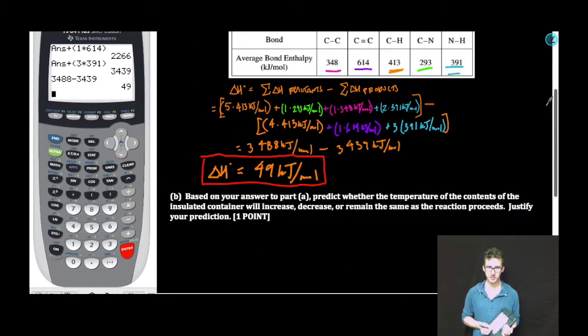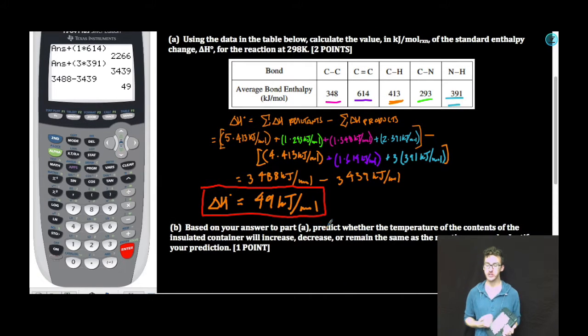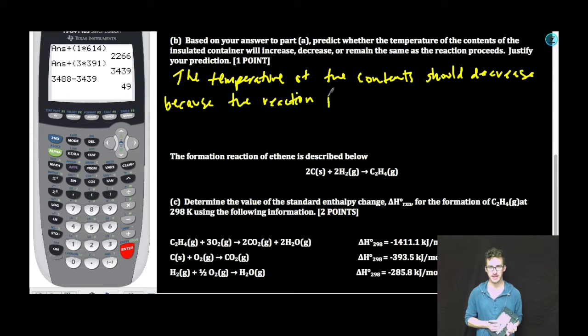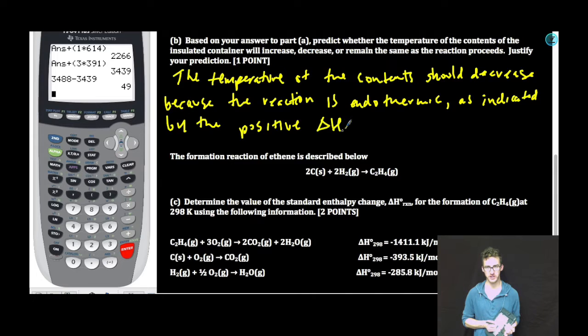Let's scroll back up to part A and realize that we just calculated the enthalpy change for the reaction to be a positive 49 kilojoules per mole, which indicates an endothermic reaction. The temperature of the contents should decrease because the reaction is endothermic as indicated by the positive delta H.